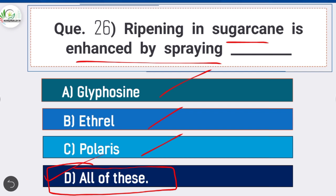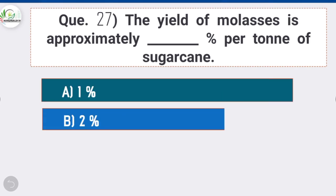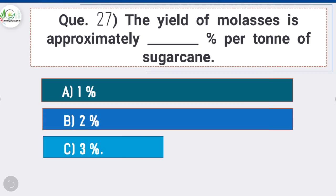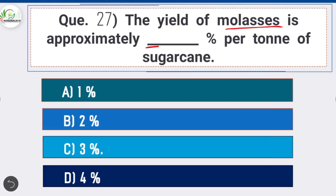Question 27: The yield of molasses is approximately what percentage per ton of sugarcane? Option C is correct: 3%. The yield of molasses is approximately 3% per ton of sugarcane.